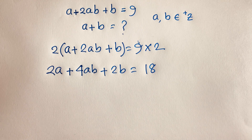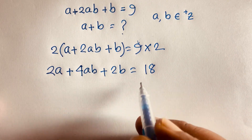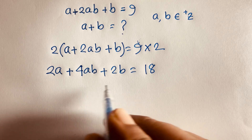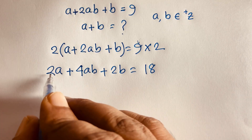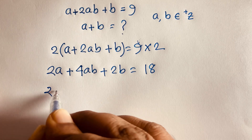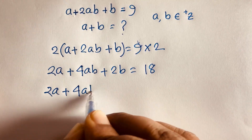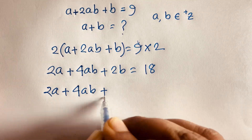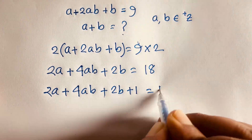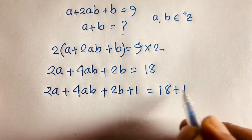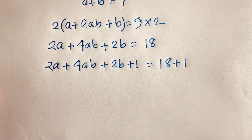Now with 2a plus 4ab plus 2b is equal to 18, I add 1 to both sides, giving us 2a plus 4ab plus 2b plus 1 is equal to 19.